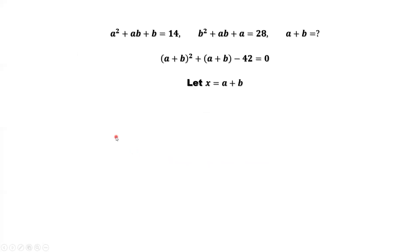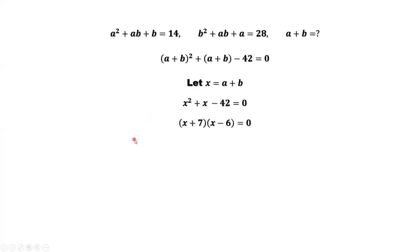If we cannot see this, we can define a new variable: x equals a plus b. Replace a plus b by x. Now here is the quadratic equation: x squared plus x minus 42 equals 0. We can solve this equation using factoring or the quadratic formula. x plus 7 times x minus 6 equals 0. From the first factor, we get x equals negative 7.